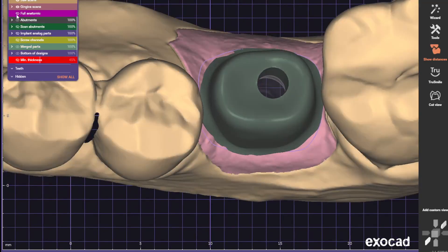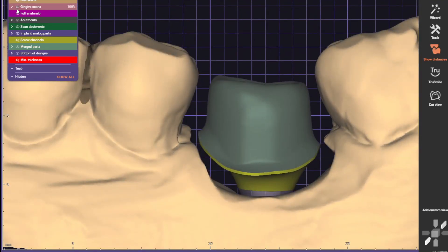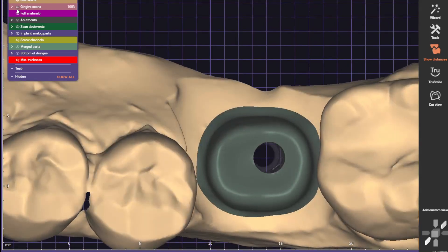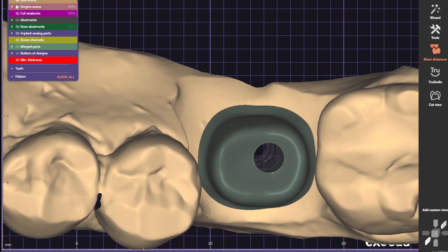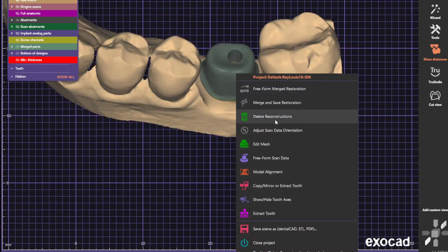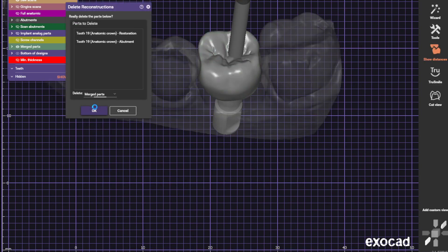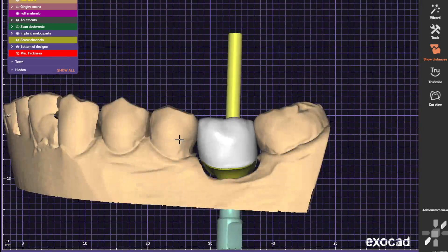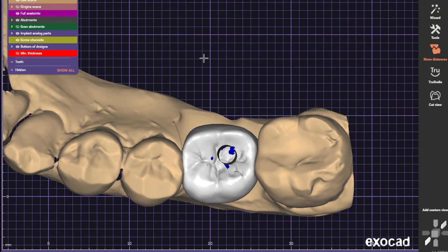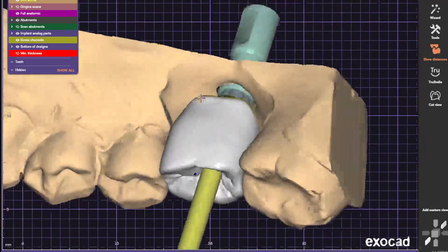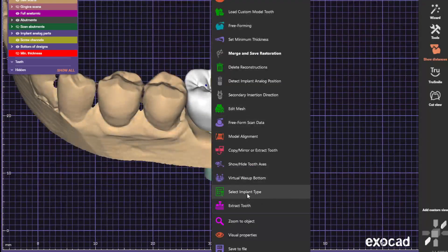But we're gonna change this to screw retained anyway, so I just wanted to let you know what our preferences are. Let's go ahead and we'll get started. We're gonna get rid of these merged parts. Crown design looks pretty nice. Let's go ahead and change this to screw retained.